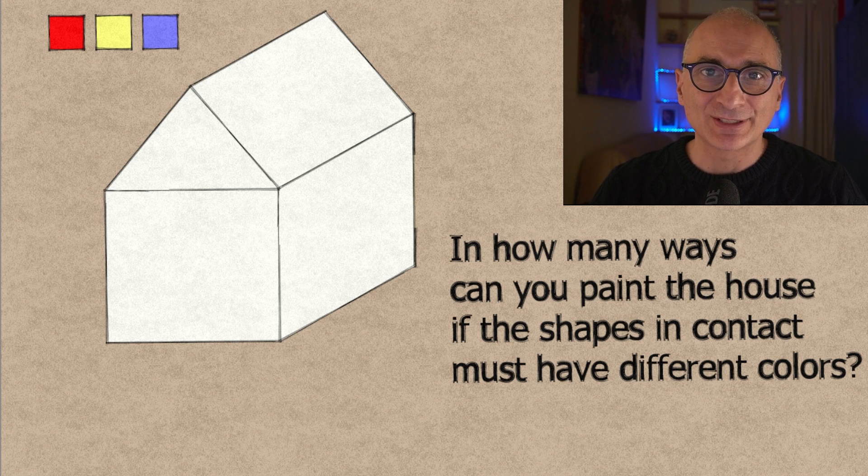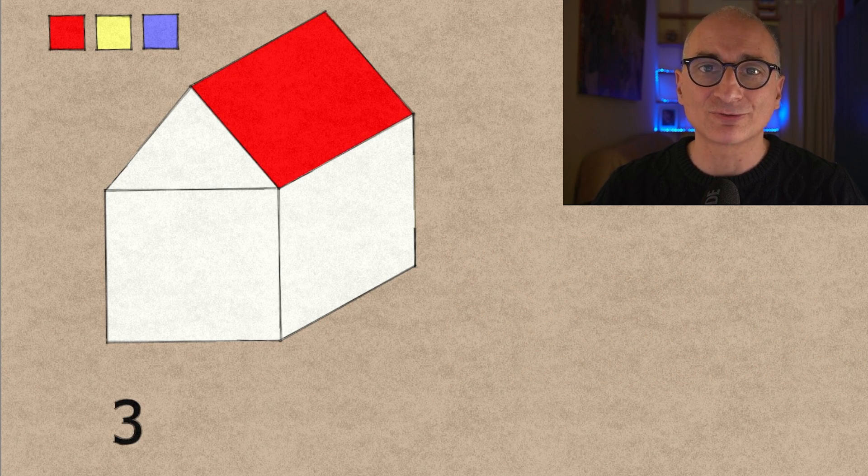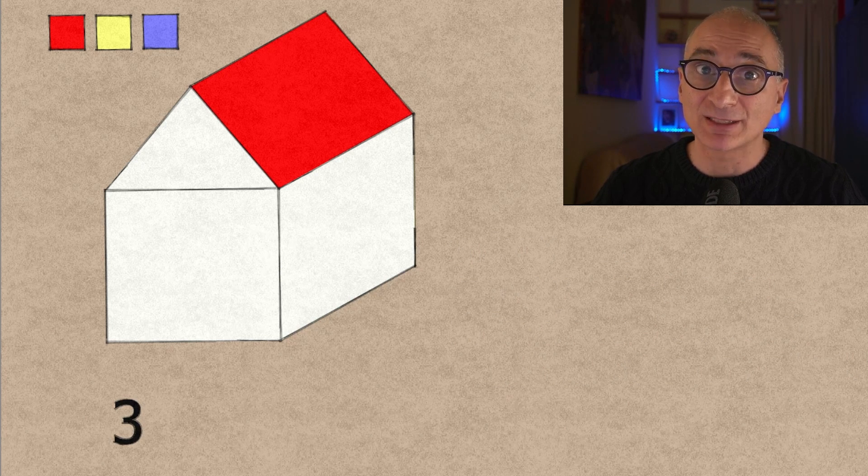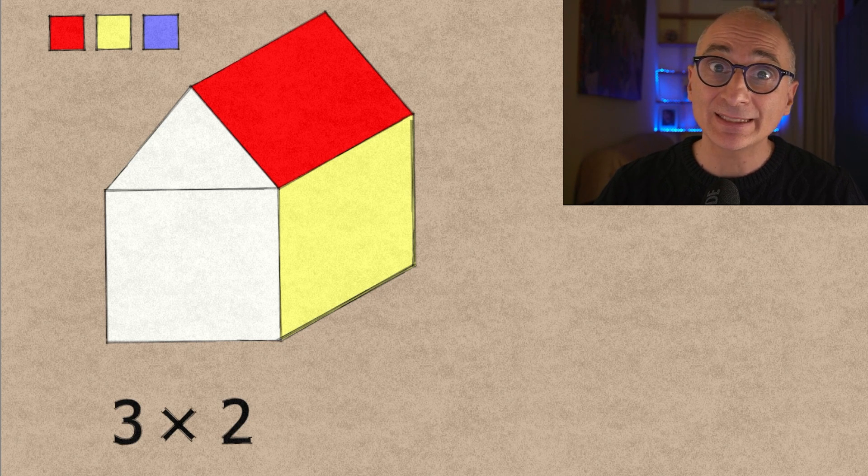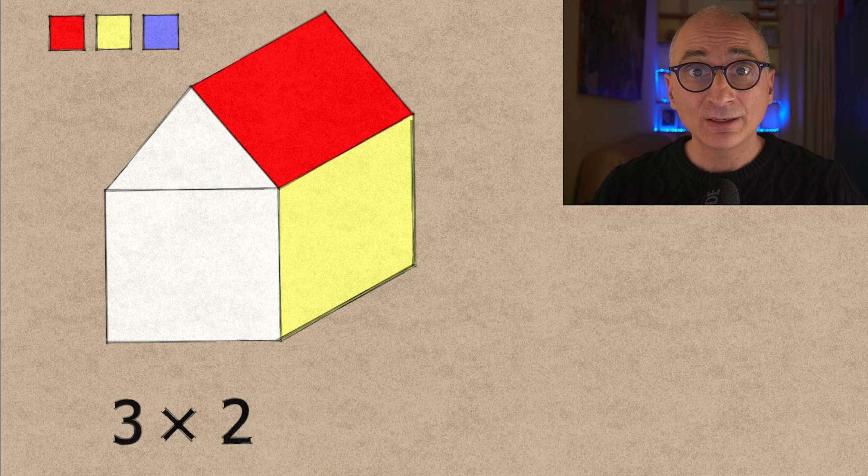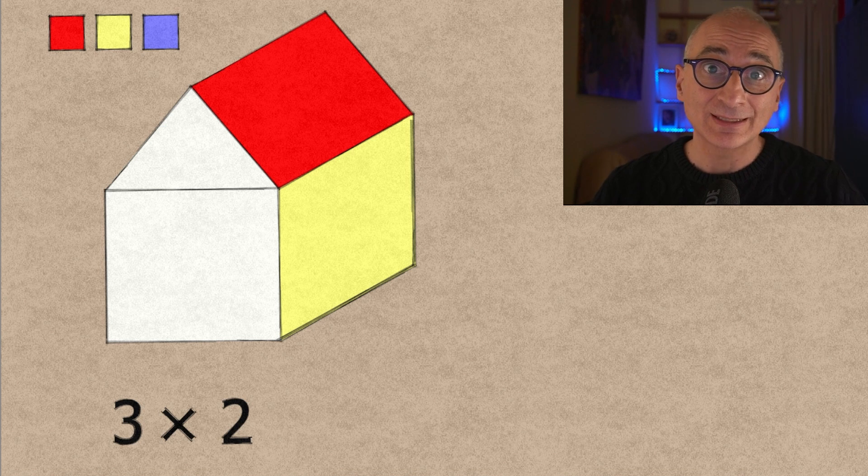So let's first consider the roof. You have three choices for the roof. Let's say you choose red and for the wall you have two choices because it must be different from the roof. Let's say you choose yellow and you have to multiply three times two because for any choice for the roof you have two choices for the wall. So you get three times two.